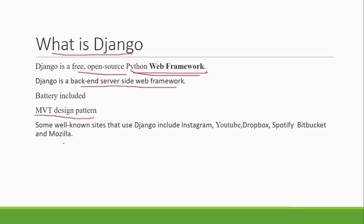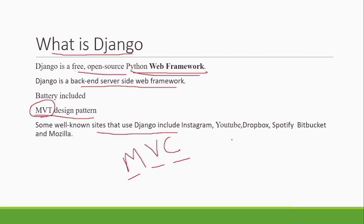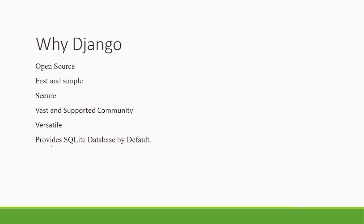Django follows the MVT design pattern. Most other frameworks follow the MVC architecture — Model, View, Controller — but Django follows MVT architecture. We will see what this architecture means in the coming slides. It is one of the most important interview questions as well. Django is used in various places like YouTube, Dropbox, Spotify, and many more — that is why Django is so popular.